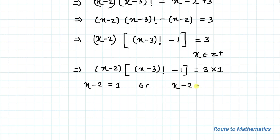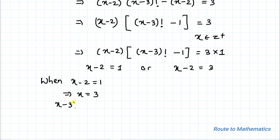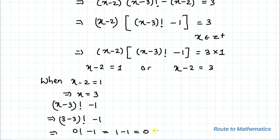From this we get either x minus 2 equals 1 or x minus 2 equals 3. When x minus 2 equals 1, the other factor must equal 3. This gives x equals 3. Substituting into (x minus 3) factorial minus 1 gives 0 factorial minus 1, which equals 1 minus 1 equals 0 — not 3. So x equals 3 is not a solution.